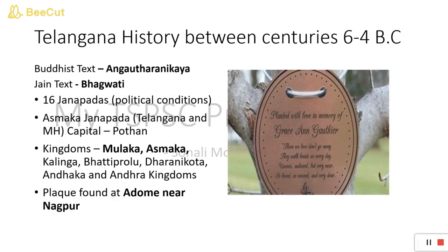There was an Ikshvaku prince called Asmaka who occupied the region, and that is how the name Asmaka came into picture. Regarding how he got this name — one of his ancestors, specifically his mother, was seven months pregnant when a guru called Vashishta helped make the pregnancy viable using an instrument called Asmaka. That is how he received the name Asmaka.